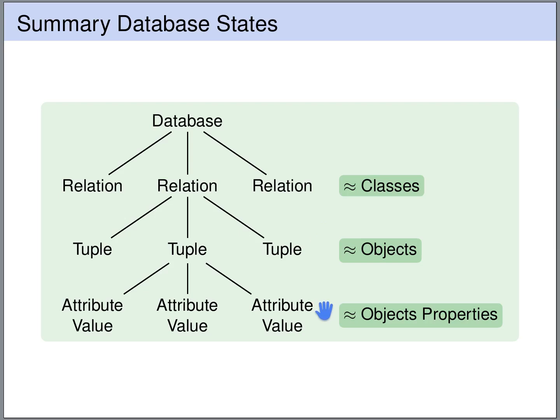There is a clear analogy with object-oriented programming. Roughly speaking, the relations correspond to classes in object-oriented programming, you may think of the tuples as objects, and the attribute values as object properties.